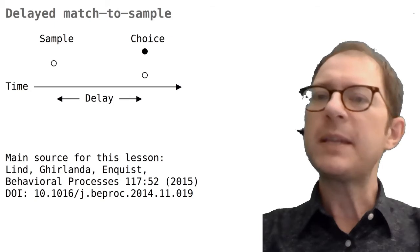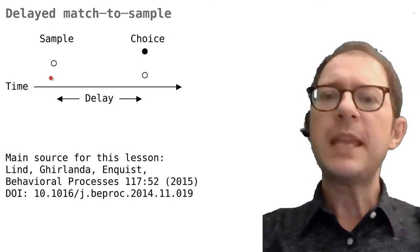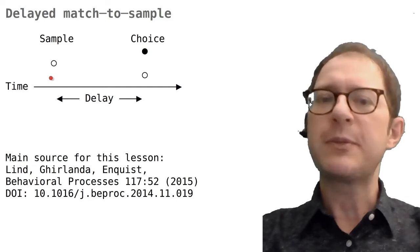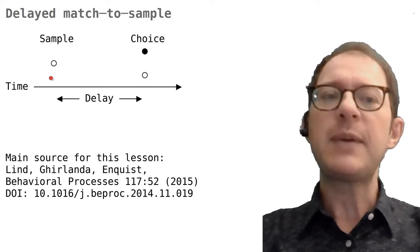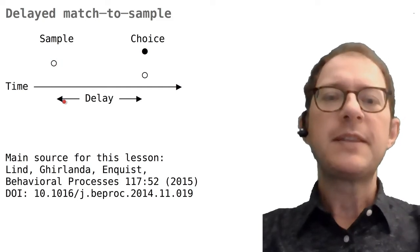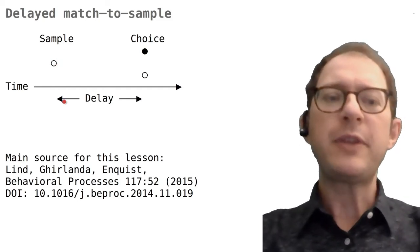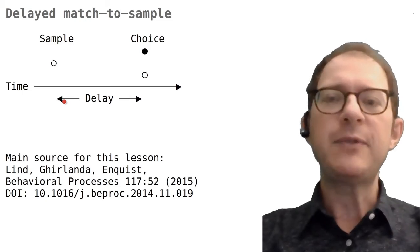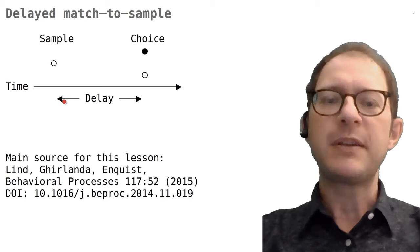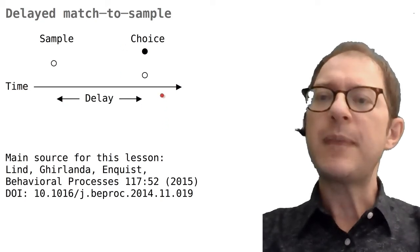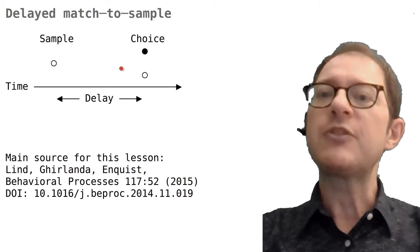This is described in the timeline. At the beginning of each trial, a stimulus is presented on a computer screen or in some other way. This is called the sample stimulus, and in our example it's a white circle. After a couple of seconds, the sample stimulus is removed and nothing is shown for a while. This is called the delay period. At the end of the delay, two stimuli appear called the choice stimuli.